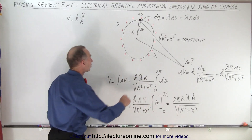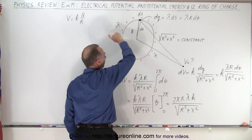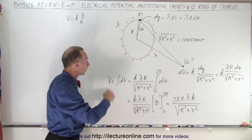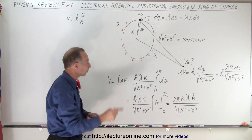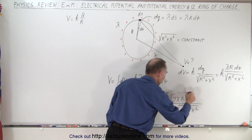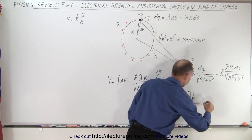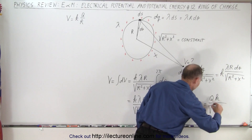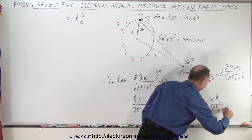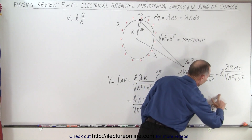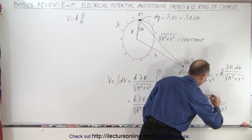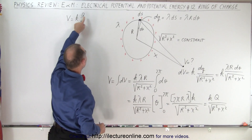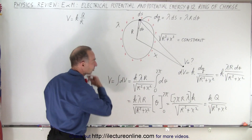We have linear charge density lambda and the path length all the way around is 2πr. Multiplying the circumference 2πr by the linear charge density gives the total charge on the ring. So this can be written as the total charge Q times k divided by the square root of r squared plus x squared — or written as k times Q, which looks just like the familiar format kq over r for the potential.